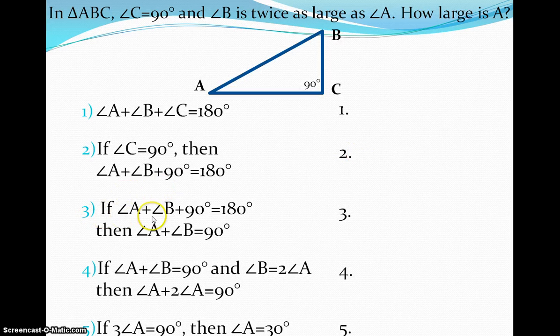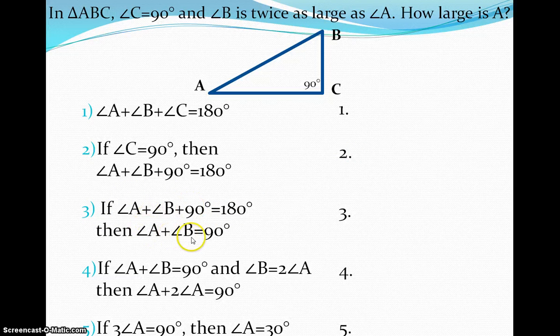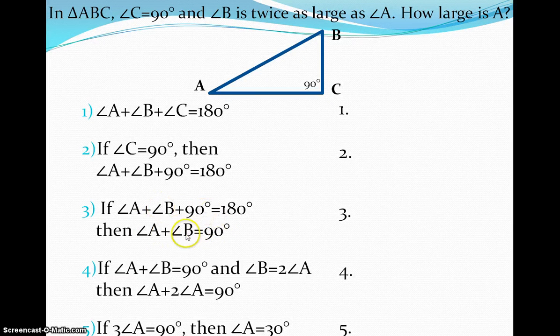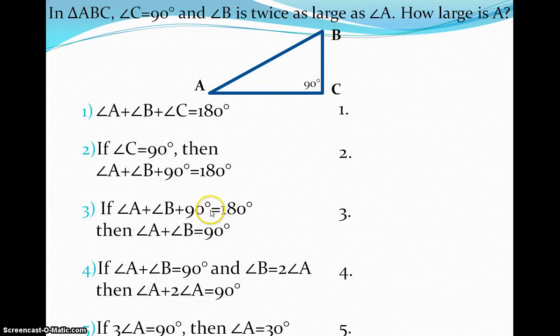Number three, if angle A plus angle B plus 90 is equal to 180, then angle A plus angle B is equal to 90. So think about these two lines here and basically tell me which property I was able to use to go from this statement here to the then statement down here.